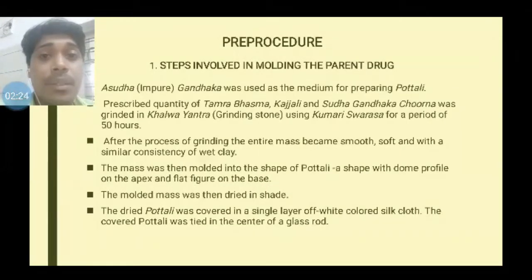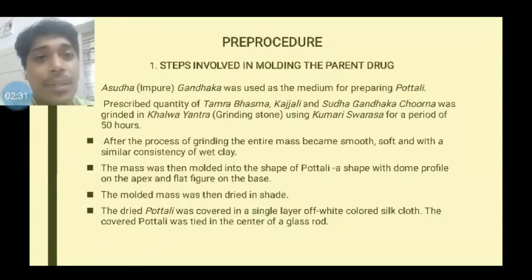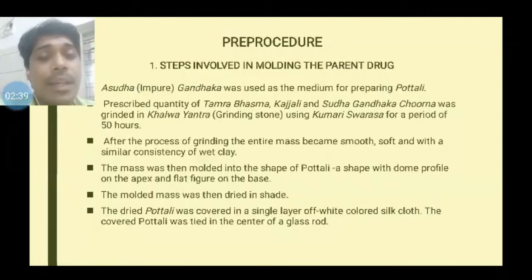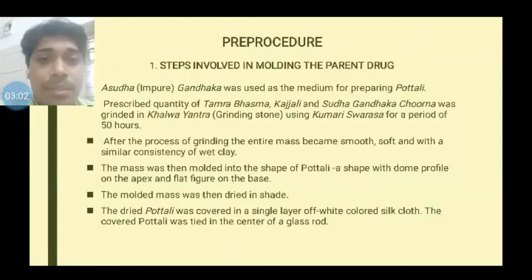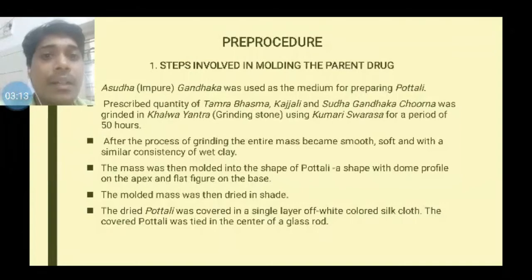Coming to the pre-procedure, there are two steps. The first is moulding of the parent drug. The drug is ground with Aloe vera juice for 50 hours. When it attains a wet clay-like consistency, it is moulded into a shape where the apex is dome-shaped and the base is flat — more or less like a Shivalinga. The moulded mass is then dried in shade. The dried portali is then wrapped in a single layer of white silk cloth with a tiny glass rod, to be hung in a pot and subjected to swedana, or boiling, in molten Gandhaga.